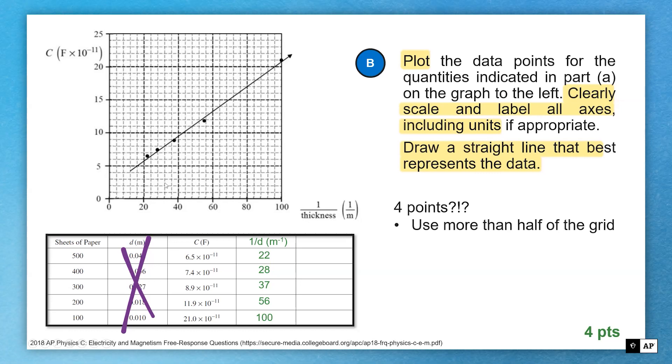If you graph using more than half the grid, that's one point. If you scale this, that all the data points were squished in this little corner, you would not earn this first point. Really expand your data set to make sure it fills up as much of the full grid as possible.